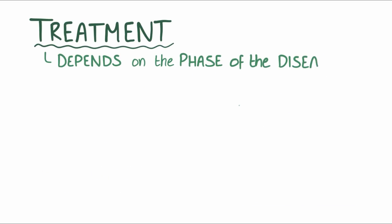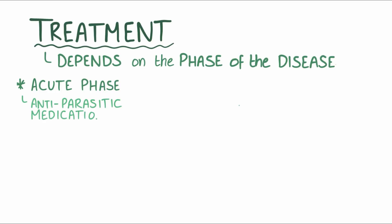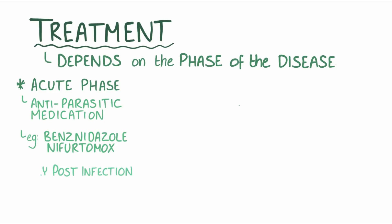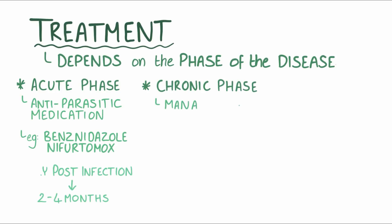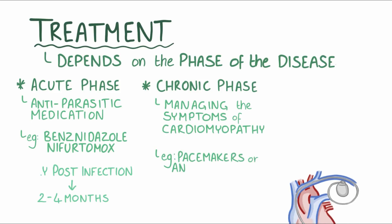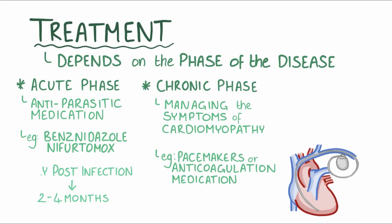Treatment depends on the phase of the disease. The most effective way to resolve the acute phase is to start antiparasitic medication, like benznidazole or nifurtimox, early after infection and continuing for 2–4 months. The chronic phase is mostly about managing the symptoms of cardiomyopathy, like with pacemakers or anticoagulation medications, and treating cases of reactivation with antiparasitic medication. A heart transplant might become necessary in advanced stages.